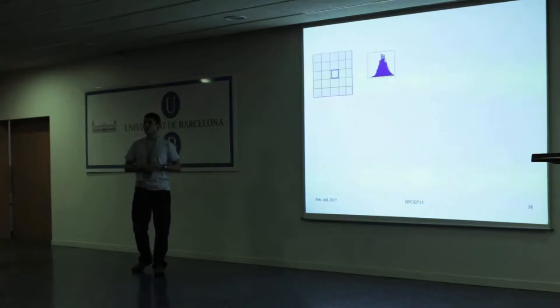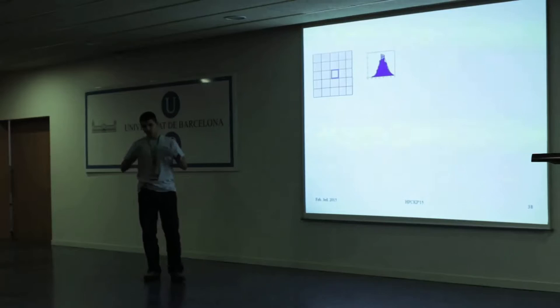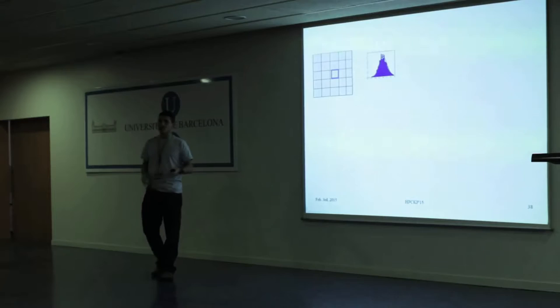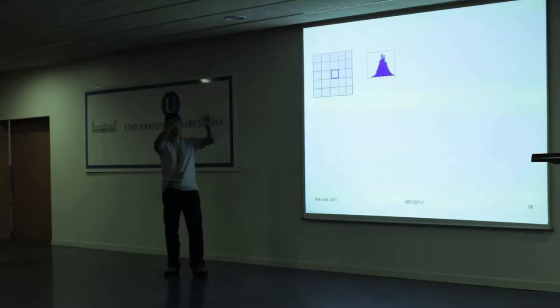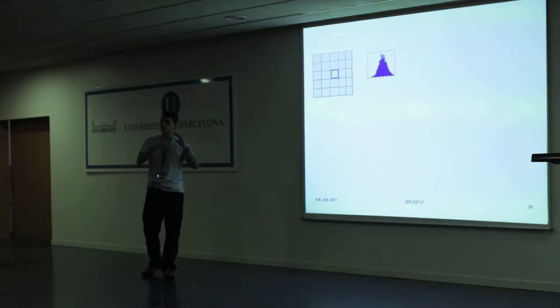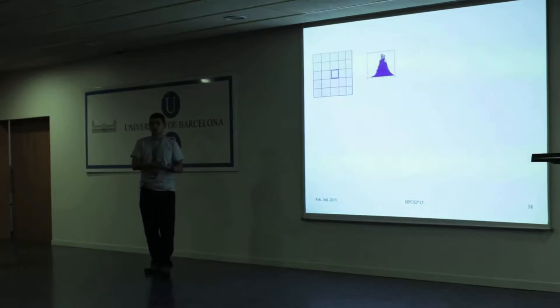The key insight is that data sets of HPC applications offer a certain level of smoothness - they don't change drastically in time or space. For example, if you look at a figure produced by a climate application, you have different temperatures in different parts of the grid, but you will probably not see that over a big area it's about 30 degrees and then one little spot is minus 50. That would be very strange.